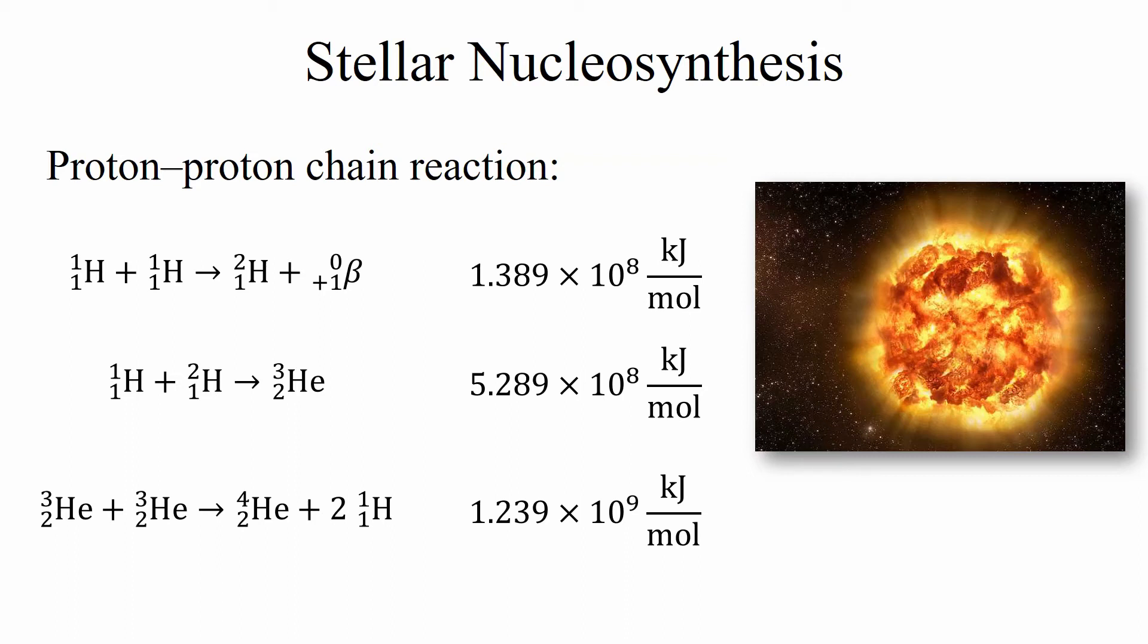Once this hydrogen comes together and starts to form enough gravity to start compressing itself then we start fusing these hydrogen nuclei together to make deuterium. This involves a fair amount of energy. Then hydrogen combines with deuterium to make helium gives you even more energy and then finally the helium-3 isotopes combined to give you your standard helium-4 plus two more hydrogen nuclei which gives you even more energy.